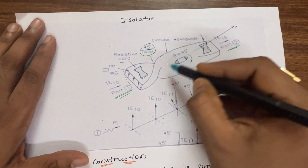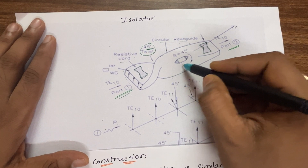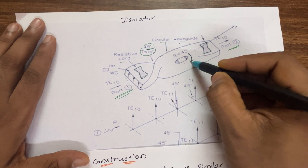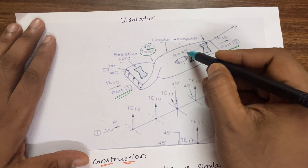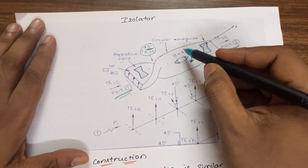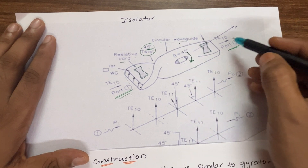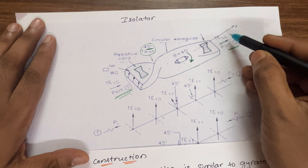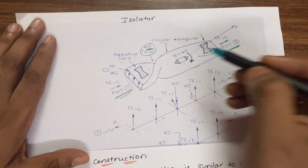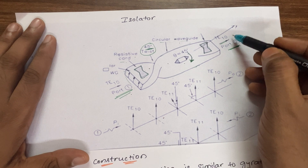After the twist, this becomes a circular waveguide. Inside this circular waveguide we place a ferrite rod — a clockwise ferrite rod with a rotation of 45 degrees. In the gyrator, we used 90 degrees anti-clockwise; now we are using 45 degrees clockwise. The circular waveguide is then converted back into a rectangular waveguide as output at port number two. The modes for the waveguides are TE10 and TE11.